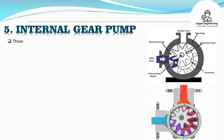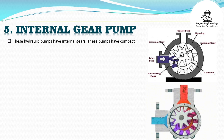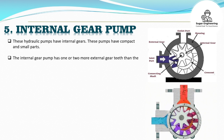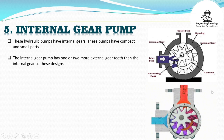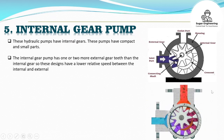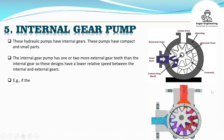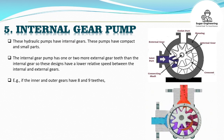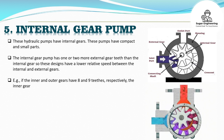Internal gear pumps have internal gears and compact, small parts. The internal gear pump has one or two more external gear teeth than the internal gear, so these designs have a lower relative speed between the internal and external gears.